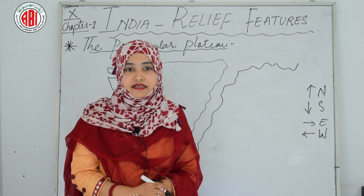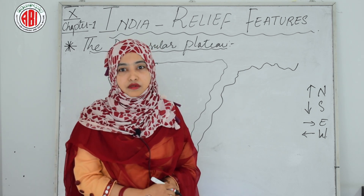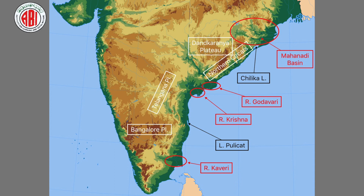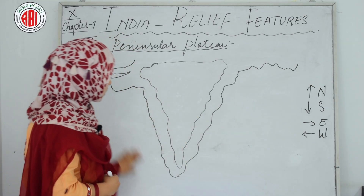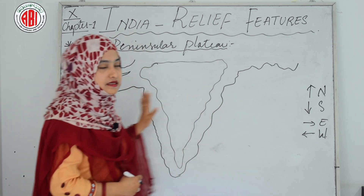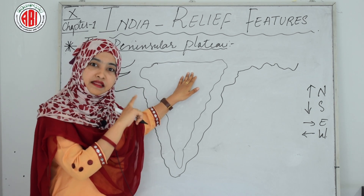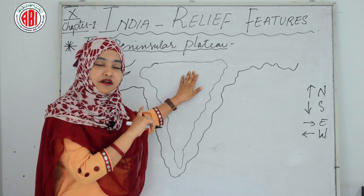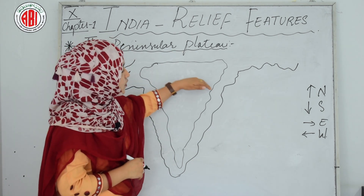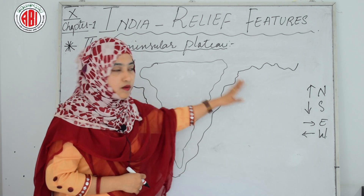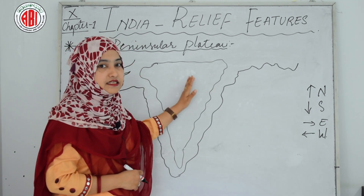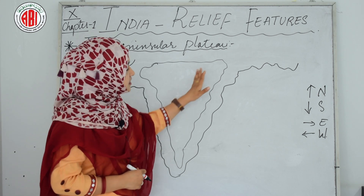The Eastern Ghats extend from the Mahanadi valley in the north to the Nilgiris in the south. The Eastern Ghats are not continuous. Rivers originating in the Western Ghats — like Godavari, Krishna — cut across the plateau and join the Bay of Bengal. That is why the Eastern Ghats are not as dry as the Western Ghats; they are covered by rivers.